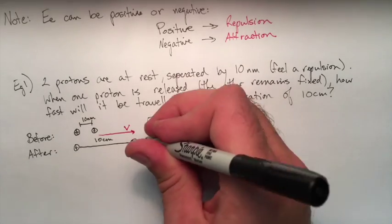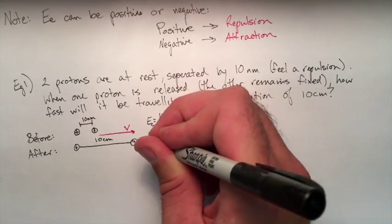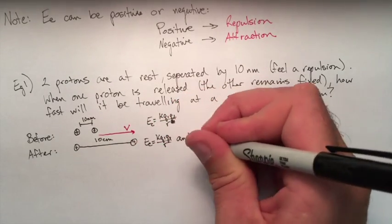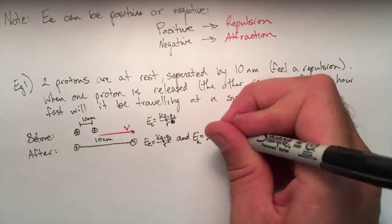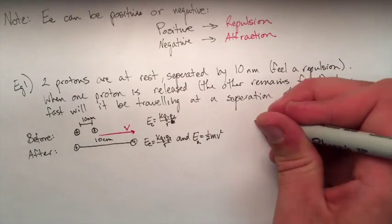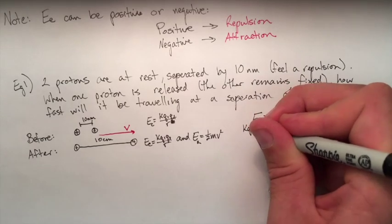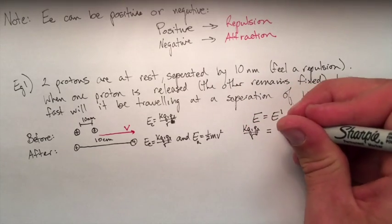Beforehand, the only energy we're dealing with is electrostatic energy, so k q q over r. Afterwards, it's moving. There is a separation. It's going to be bigger. We still have electrostatic energy, but now it's also going to have kinetic energy.